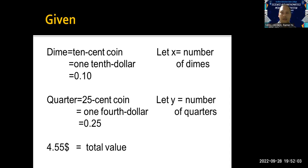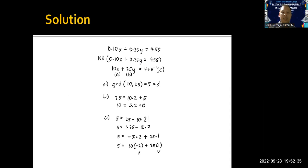And for the word 'quarter,' that means a 25-cent coin, that also means one-fourth dollar, so we can represent a quarter as 0.25. We let y be the number of quarters. We do not know yet the number of coins of dimes and quarters, but we know that the total value is $4.55.